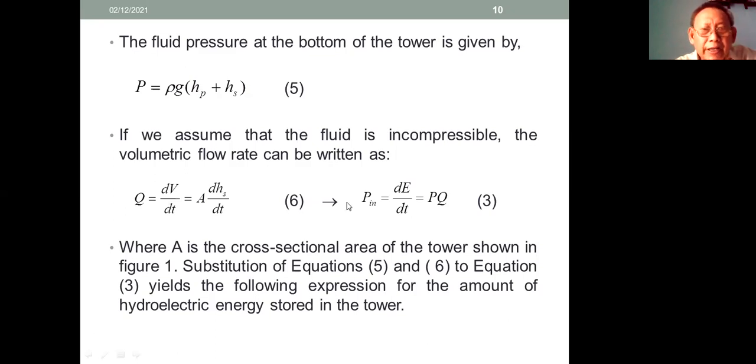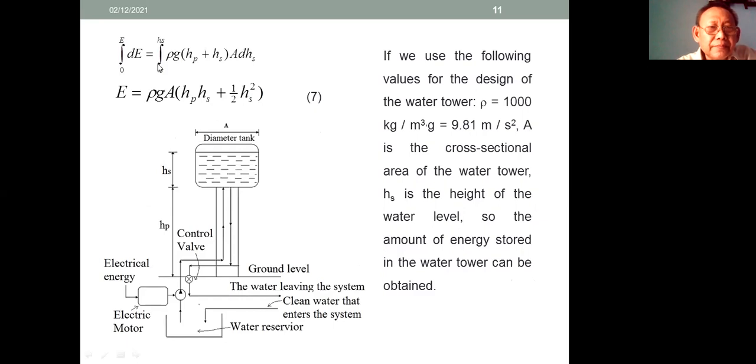Substitution of equation 5 and 6 to equation 3 yields the following expression for the amount of hydroelectric energy stored in the tower. The integral of dE results in E = ρGA(HP × HS + 1/2 HS²).